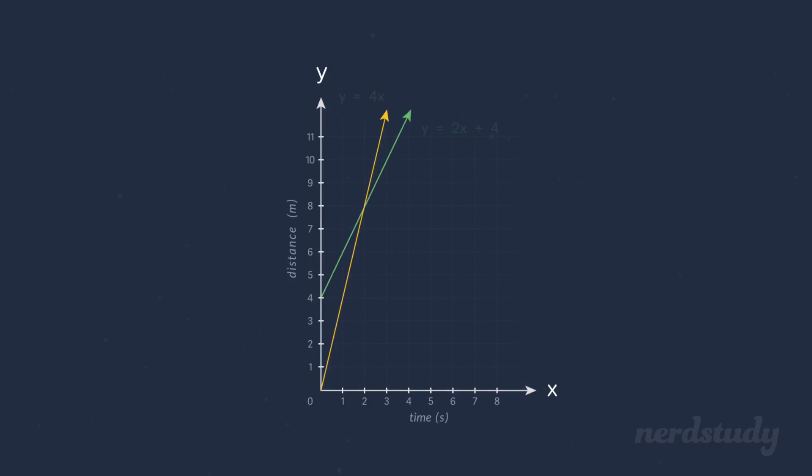So when we start our race, you give me a head start by exactly four meters. How do I know this? Well, you can see that the Y intercept is four.